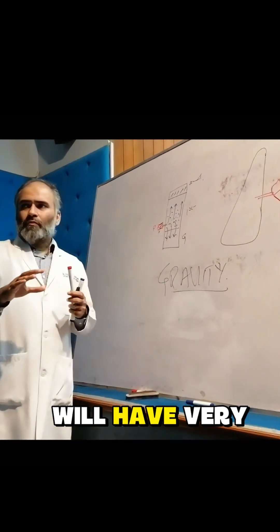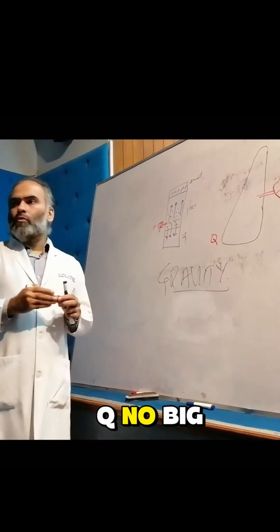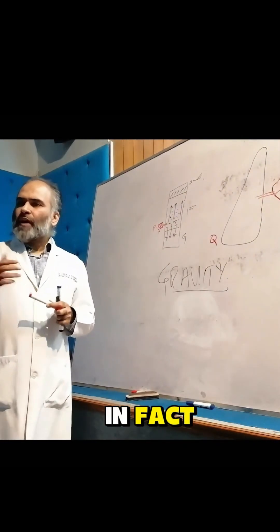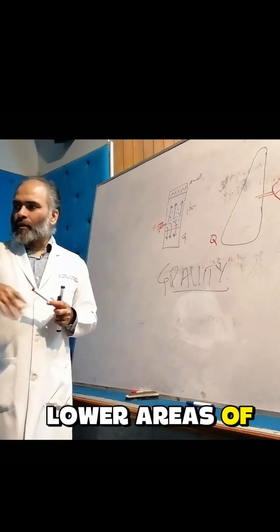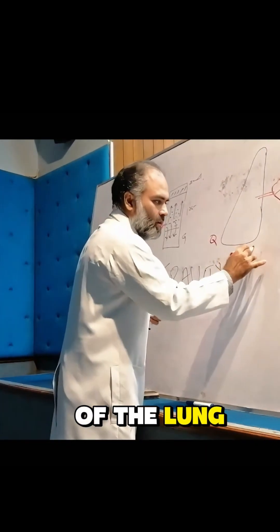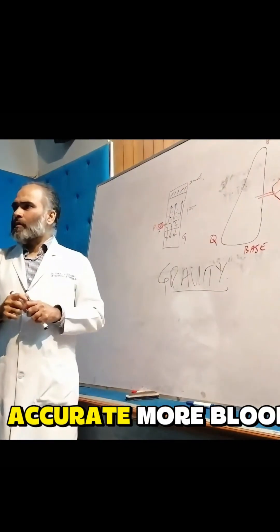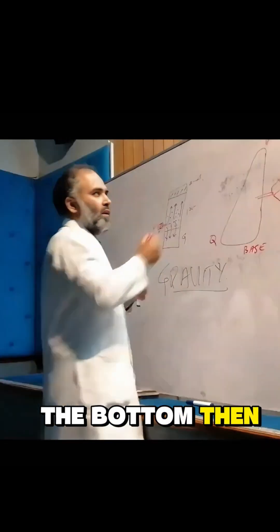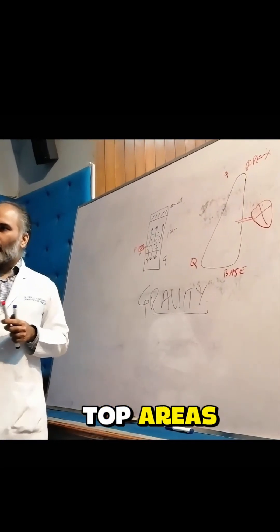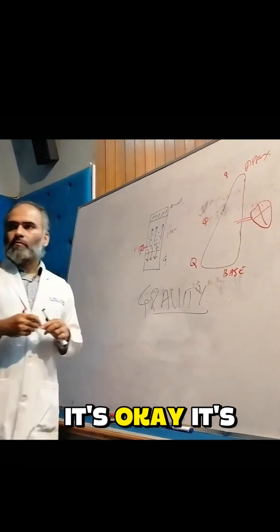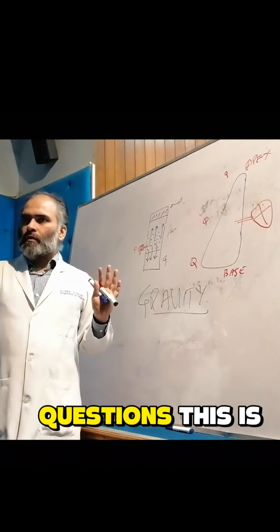The lower areas of the lung will have very little or zero problems with blood flow — with Q — no big issue, no problem at all. In fact, blood flow is a lot in the lower areas of the lung, from now on called the base of the lung, as compared to the apex or apical areas. More blood flow is at the bottom than at the top — I made it small because there is less blood flow naturally at the top — and in the middle it's normal.